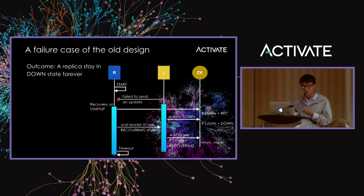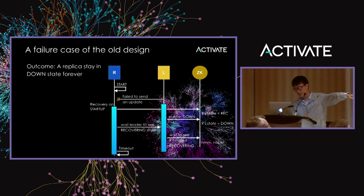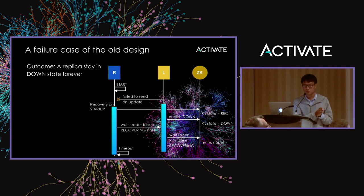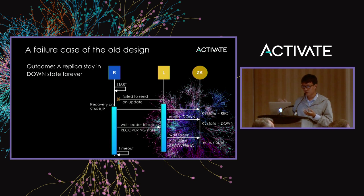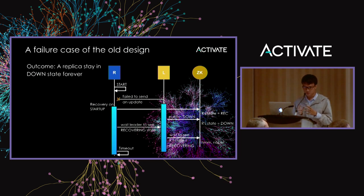The replica on startup starts the recovery process to catch up with the leader. The first operation of recovery is the replica publishes its state to Recovering — R_state equals REC. But at the same time the LIR thread on the leader publishes the replica state to Down. So when the replica is in the middle of recovery waiting for the leader to see its state as Recovering, it turns out we never reach that point because the leader already changed the replica state to Down. This is a simplified version with LIR state operations removed.